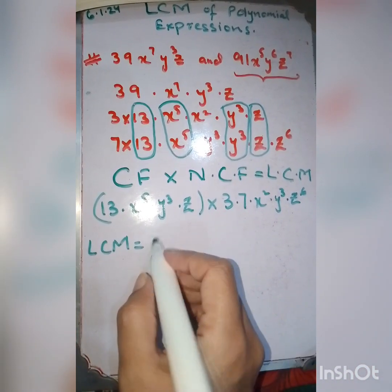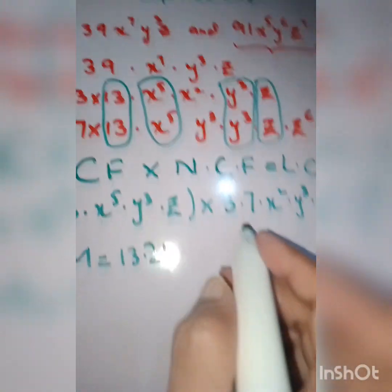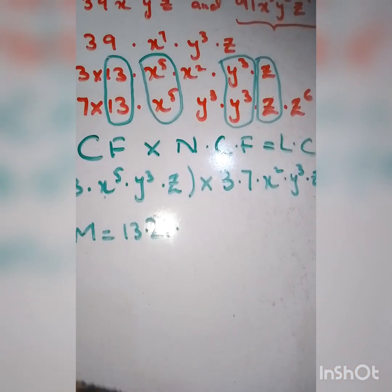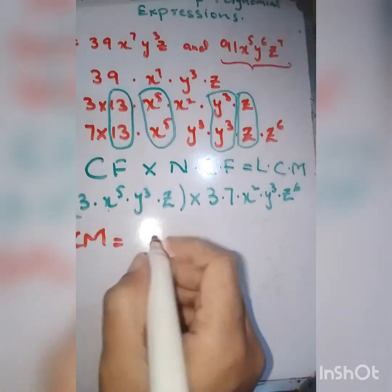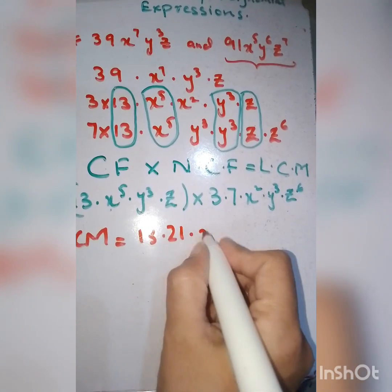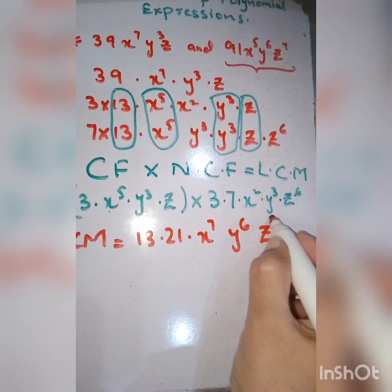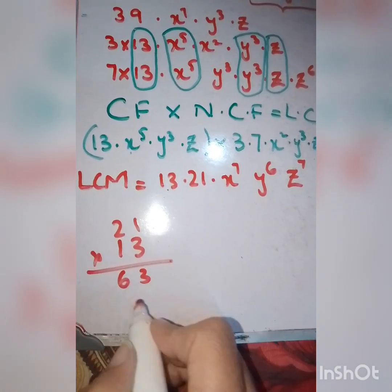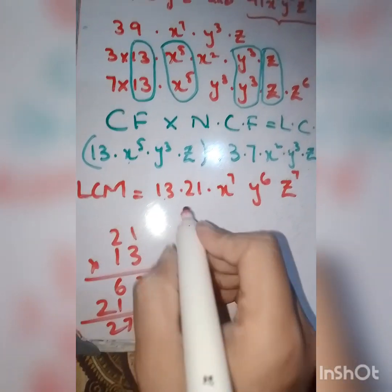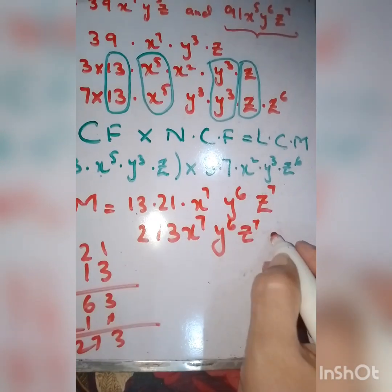In the end, we multiply and get the answer. 13 times 3 times 7 is 21, so we write 13 · 21. For the same base, powers are added: x^5 and x^2 gives x^7, y^3 and y^3 gives y^6, z^1 and z^6 gives z^7. 13 times 21 equals 273. So the answer is 273x^7y^6z^7. This is the LCM obtained from the given two terms.